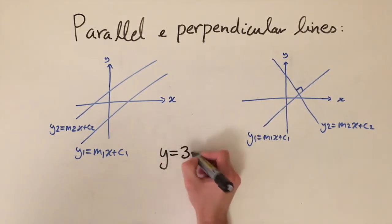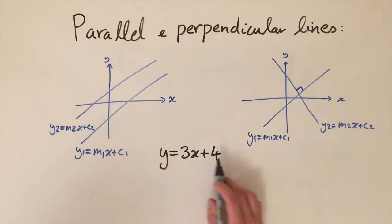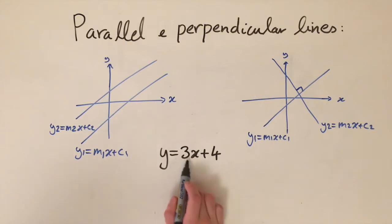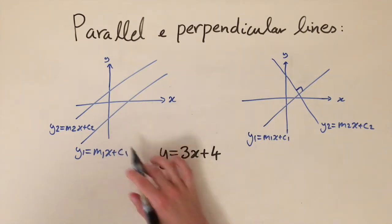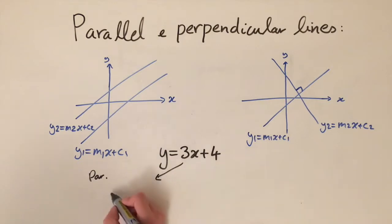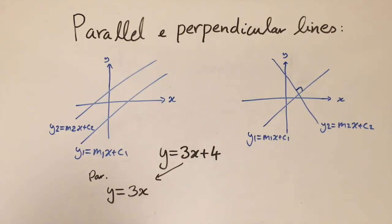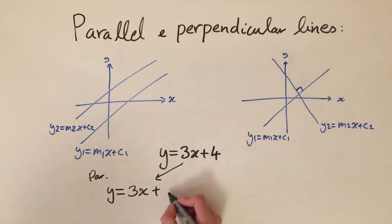Let's do a quick example. Take the line y equals 3x plus 4: the gradient is 3 and the y-intercept is 4. Since the y-intercept doesn't really matter here, we're only interested in the gradient, which is 3. To find a parallel line we keep the gradient — so we keep 3x — and just choose another constant. Let's choose 9, giving y equals 3x plus 9.